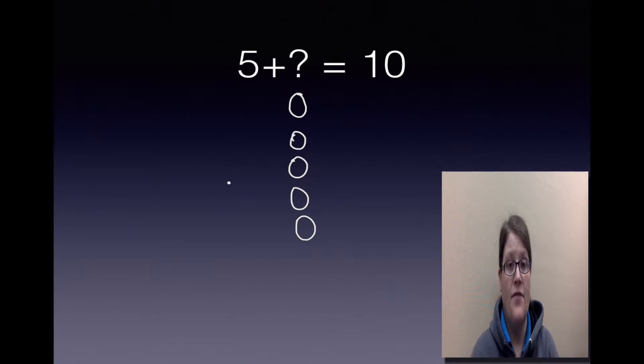And then I have the 5, I drop that down, plus, and then I just count my circles: 1, 2, 3, 4, 5. So now I know that 5 + 5 = 10. And the missing addend was? That's right, it was 5.